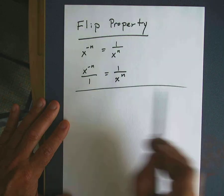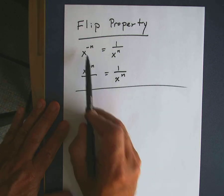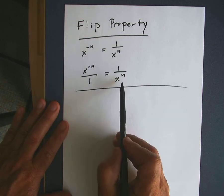So that shows that the flip property, you can use it if you have something in the numerator with a negative exponent, flip it down to the denominator.